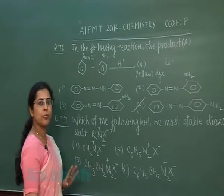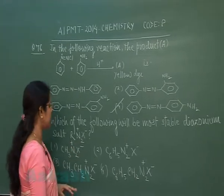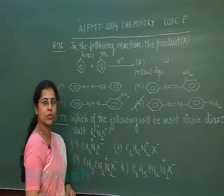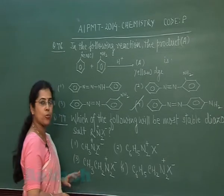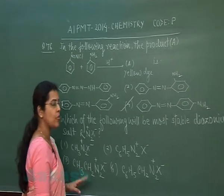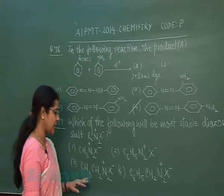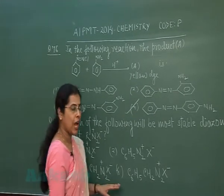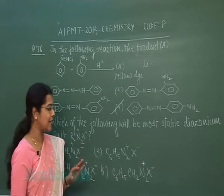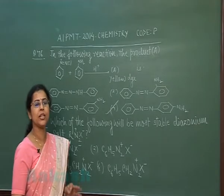Question number 77: Which of the following will be the most stable diazonium salt R₂N⁺X⁻? The options are: first, methyl diazonium salt; second, phenyl diazonium salt; third, ethyl diazonium salt; fourth, benzyl diazonium salt.